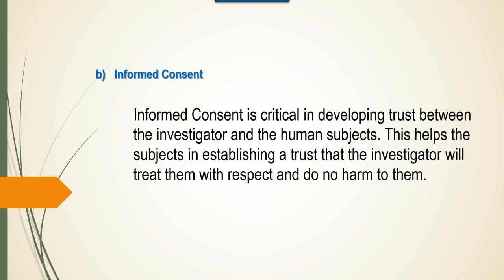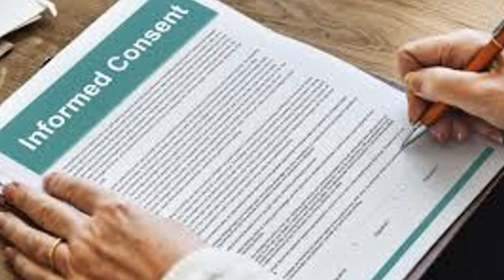Informed consent is critical in developing trust between the investigator and the human subjects. This helps the subjects in establishing trust that the investigator will treat them with respect and do no harm to them. In the process of getting consent, the researcher will explain the objectives of the research, methods followed, and how the subjects will be protected from harm. We can consider the process as a contract between the investigator and the subject. Usually, consent is a written and signed agreement, but the process involves much more than that. As the written consent form consists of jargons and legal terms, investigators read it out for the subjects for better understanding.